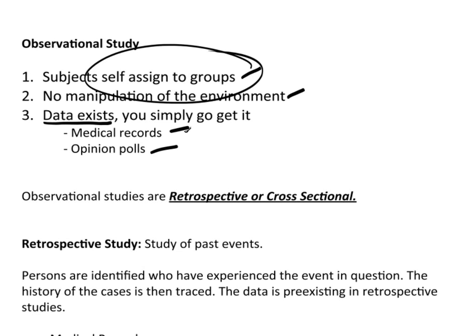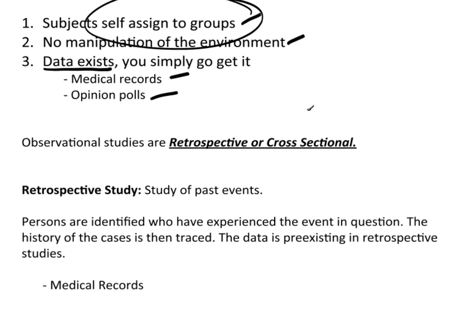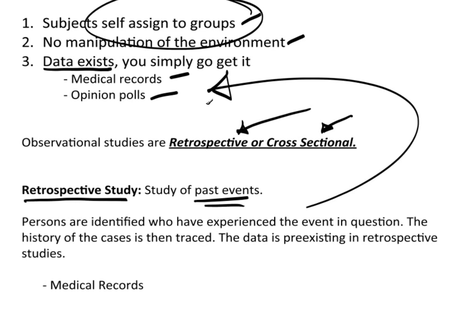Opinion polls and medical records are very common examples of observational studies. In medical records, you may go back and look at everyone who had a particular disease, examine their records, and look for common characteristics. Observational studies are typically either retrospective or cross-sectional. A retrospective study studies past events — persons are identified who have experienced the event of interest, their history is traced, and the data is pre-existing, already in the medical record.